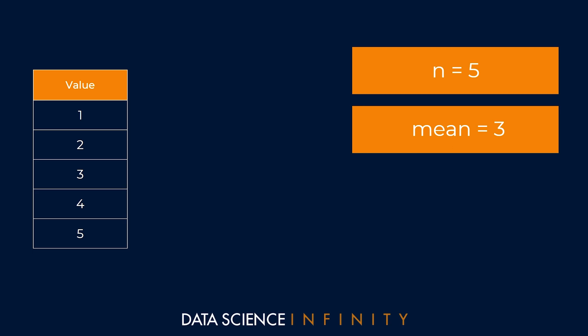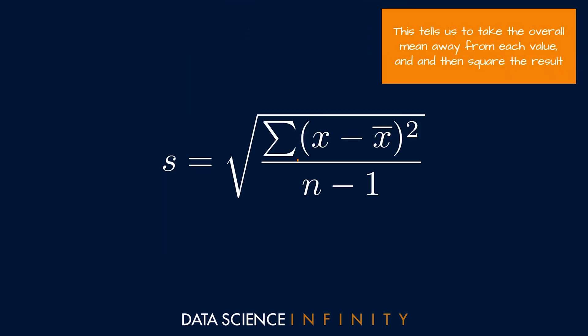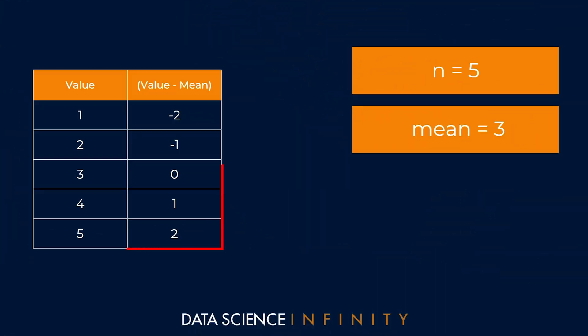And if you remember, the very first step was to subtract the mean from each of our sample values and then square the result. So if we took the mean away from each of our values, we would get these values here in the second column of our table.